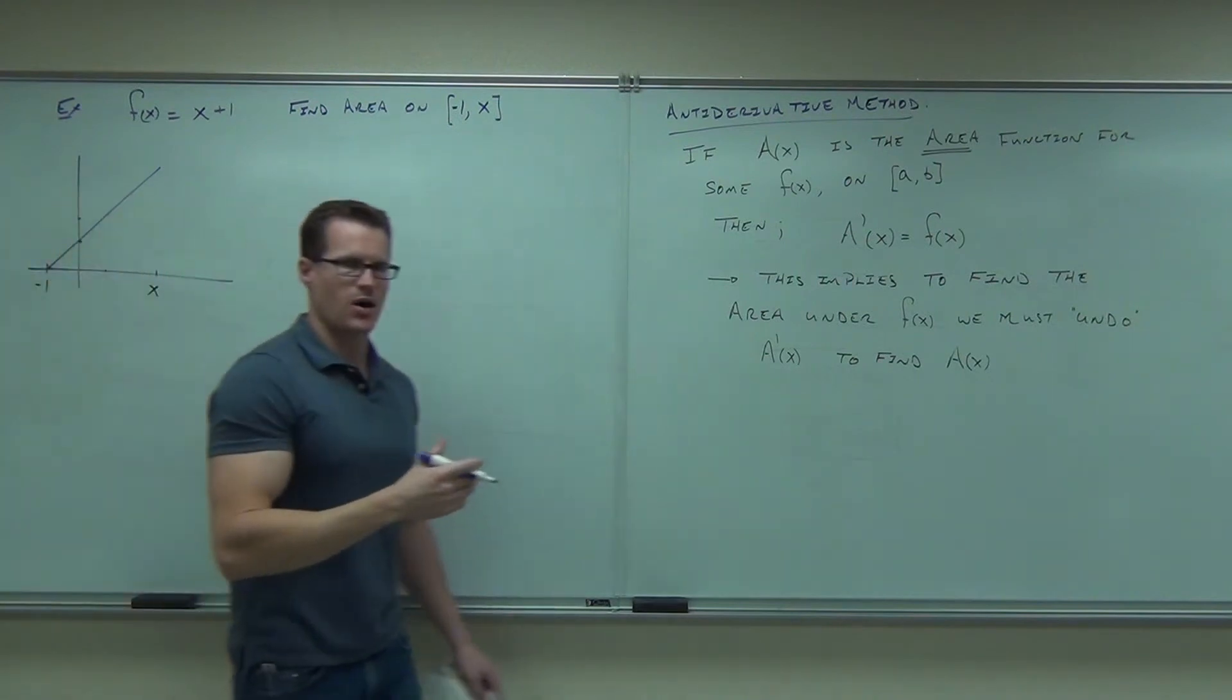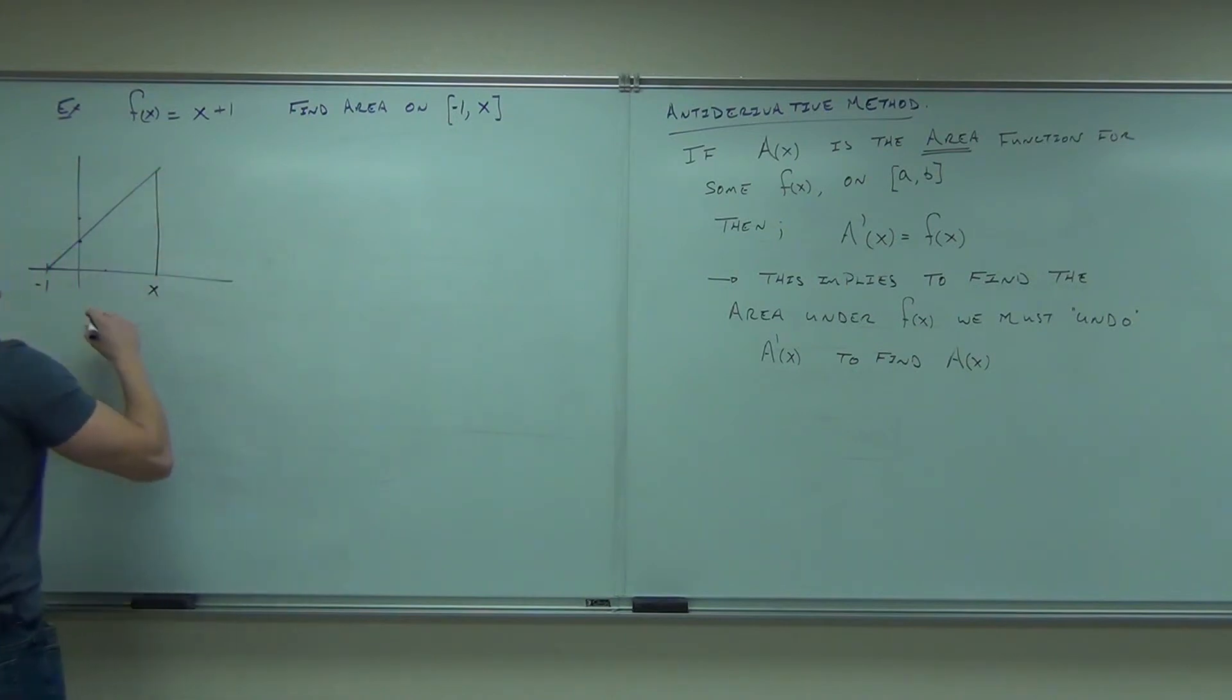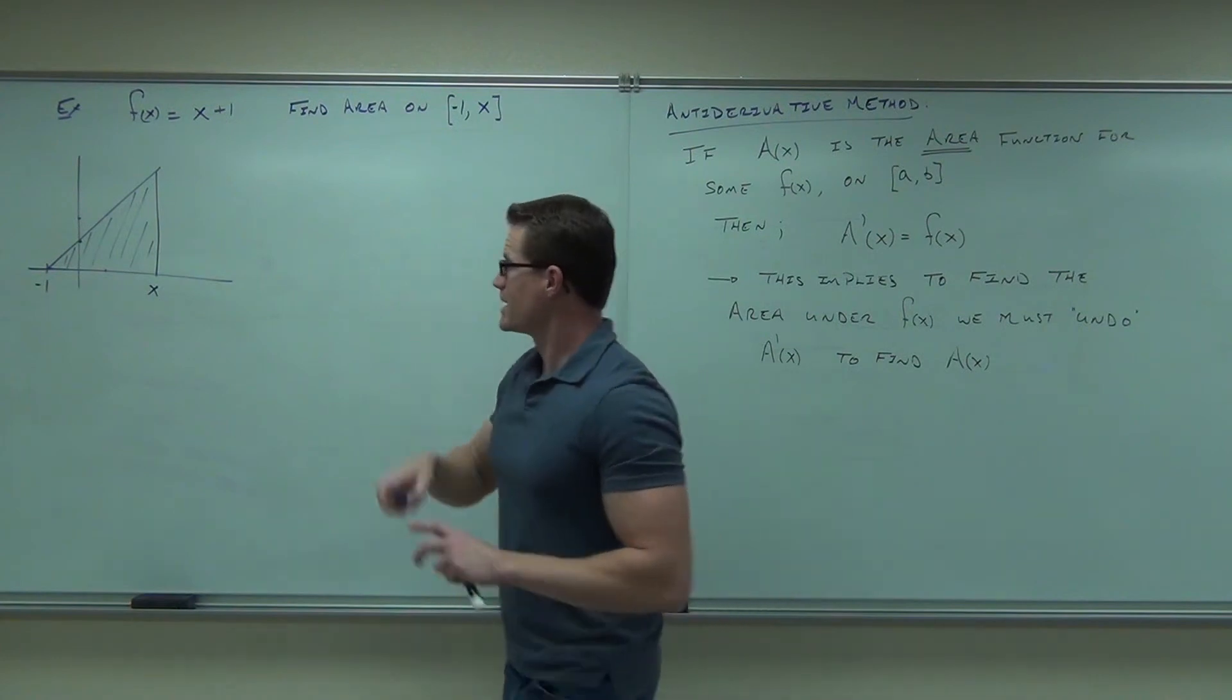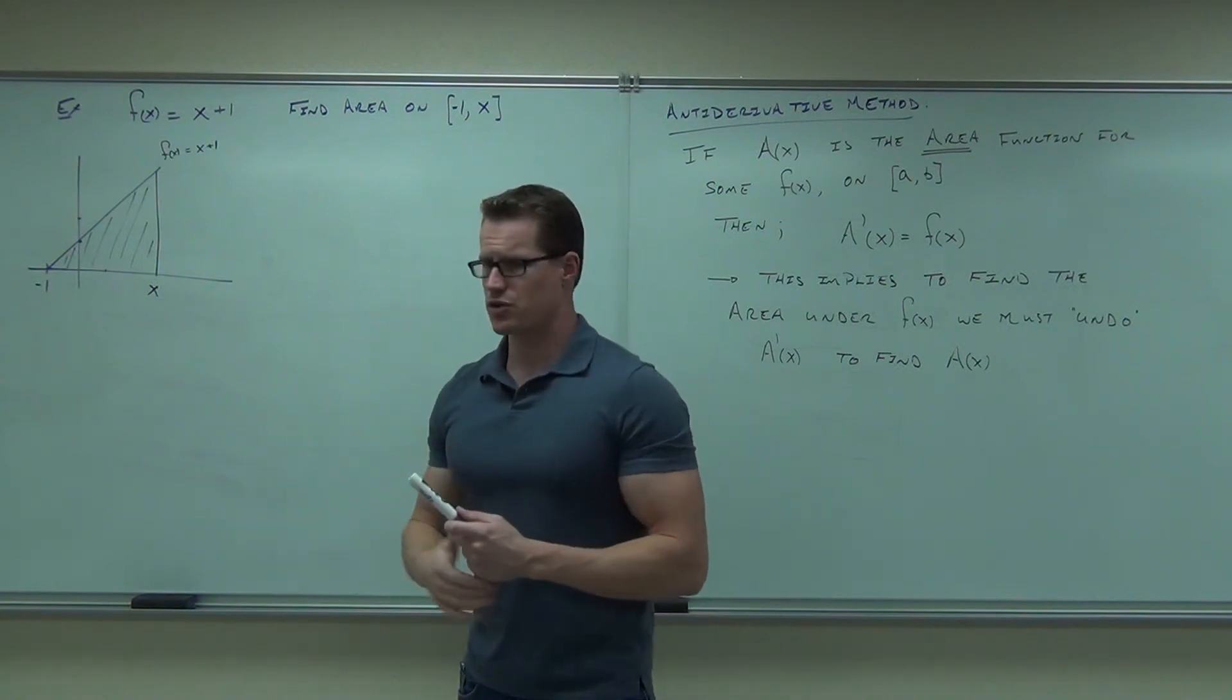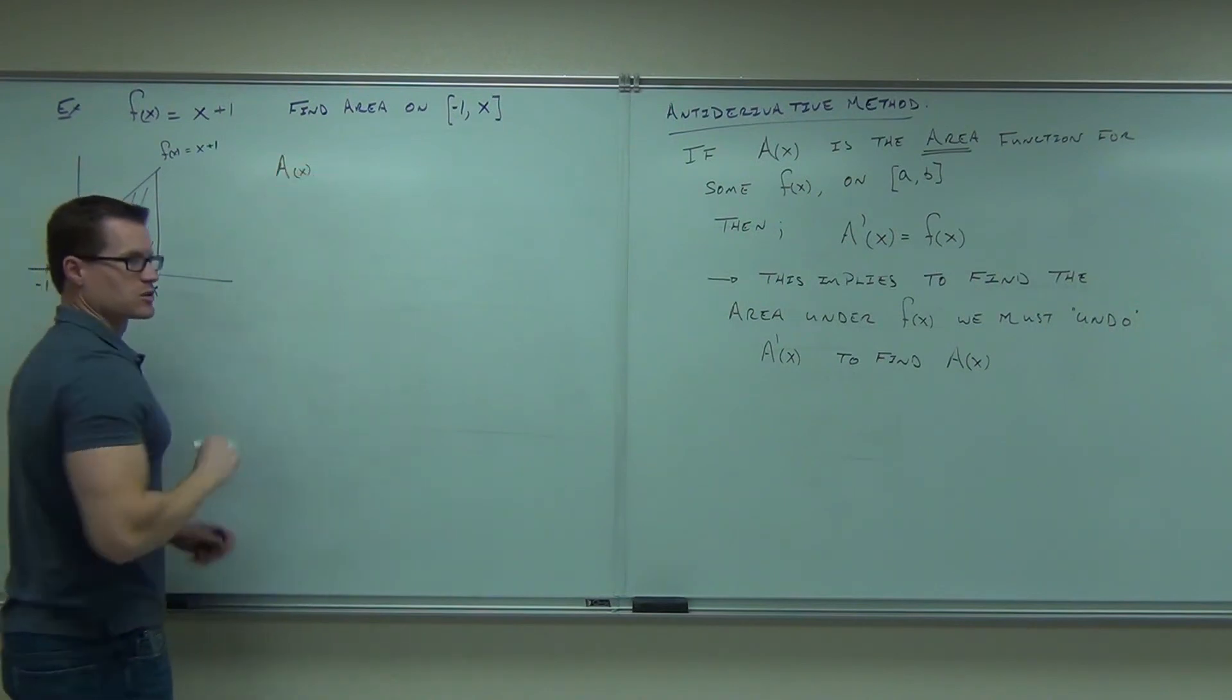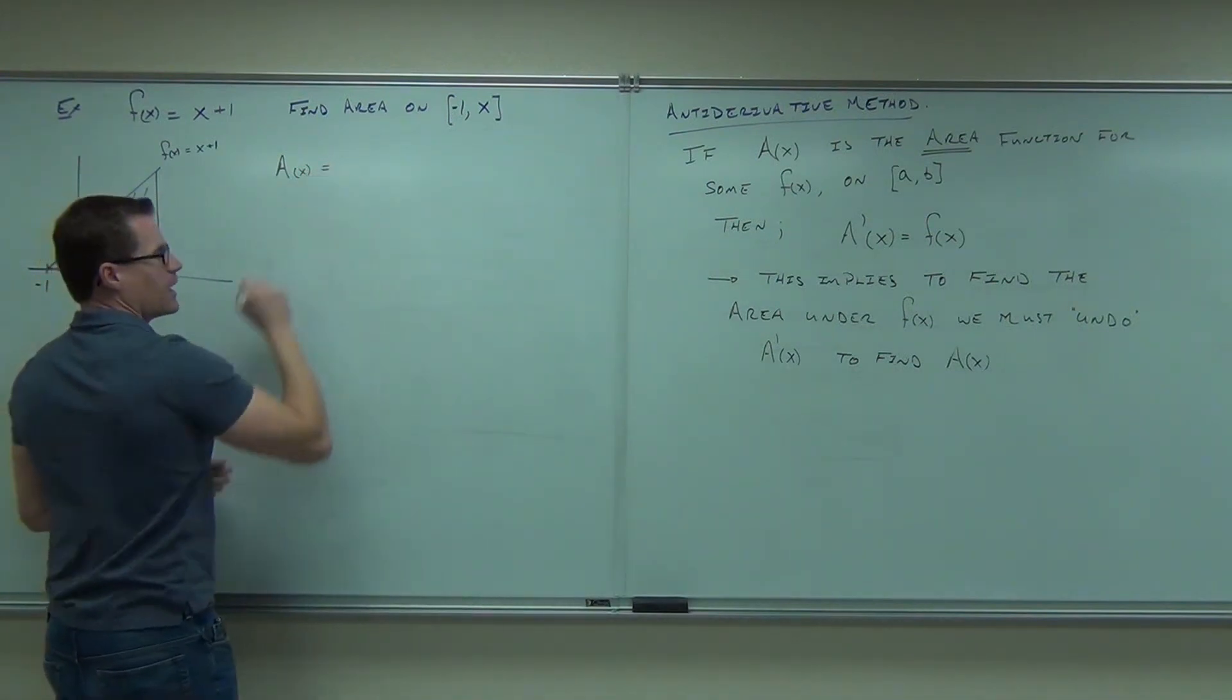First off, can you graph this? Geez, I hope so. What's your y-intercept? One. What's your slope? One. Would you agree that that is your function? We're trying to find the area of that between, what did I say, negative 1? Oh, you know what? I want negative 1. Let's make that much more interesting. Negative 1 to x. Now, I don't know where x is. I made it positive, but it doesn't have to be positive. What we're talking about, wherever this x is, is the area of that shaded region.